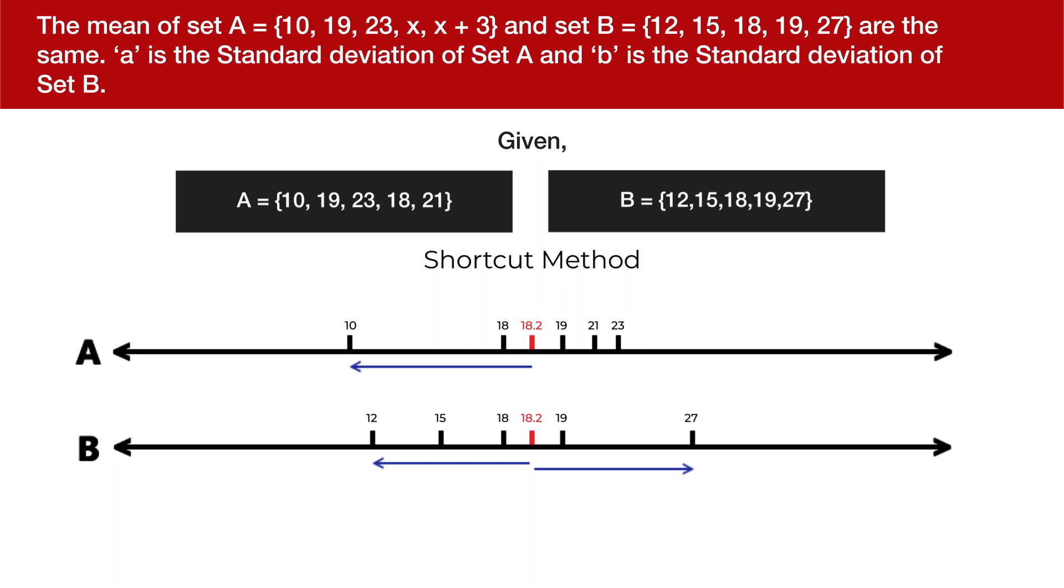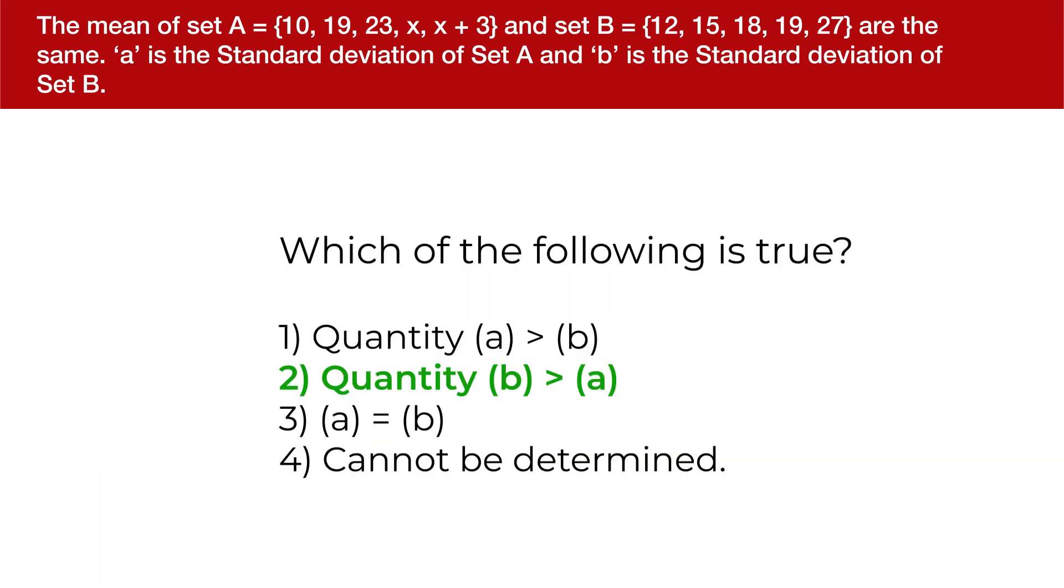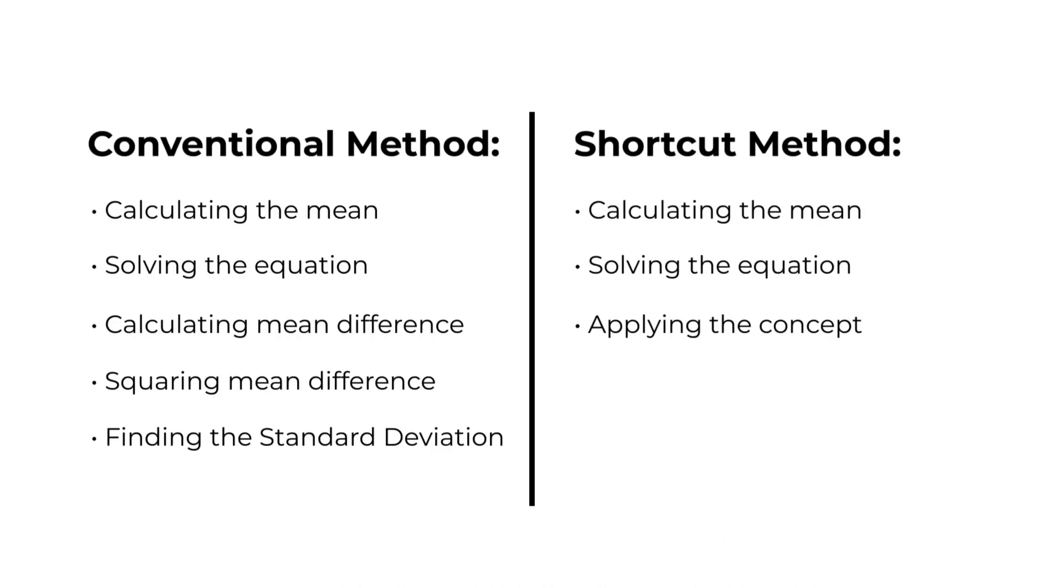So it can be safely concluded that the set values of B are more widely scattered from the mean when compared to the set values of A and hence the standard deviation of set B would be greater than that of set A.